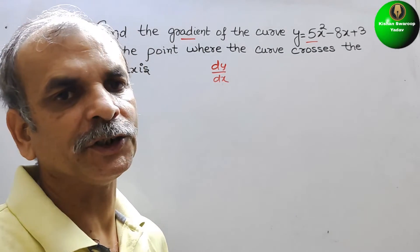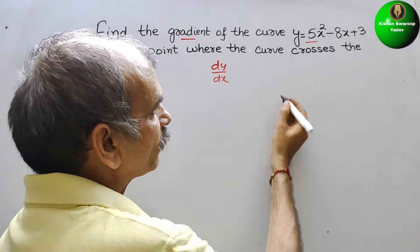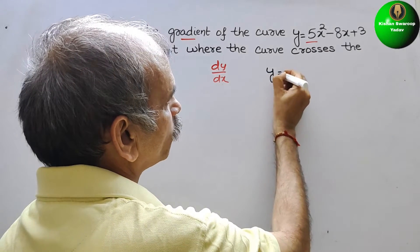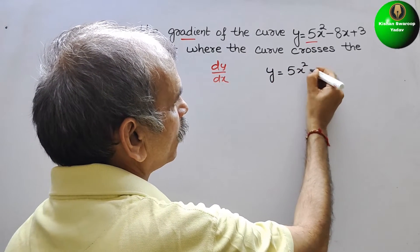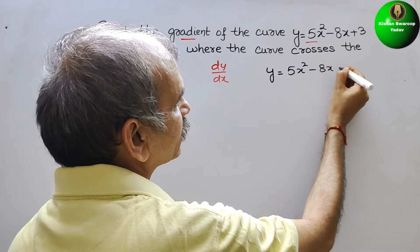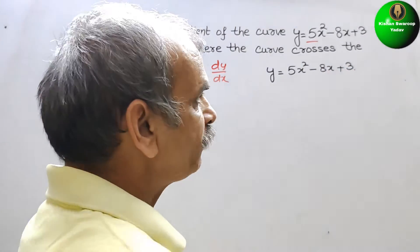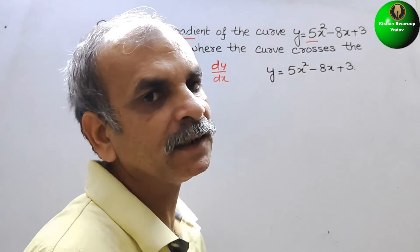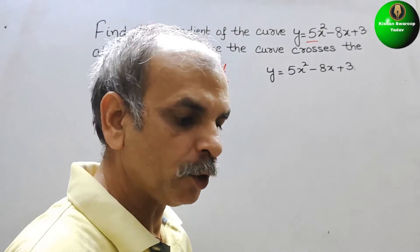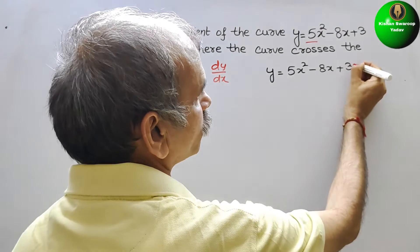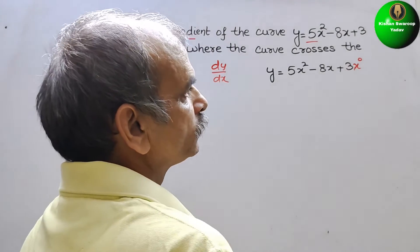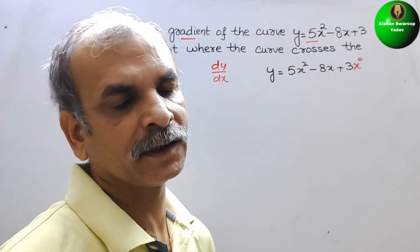First we will go for the differentiation. They have given you y is equal to 5x square minus 8x plus 3. This 3 we can rewrite it as 3 into x to the power of 0. So now your every value is in x.